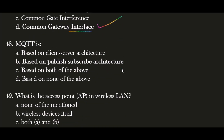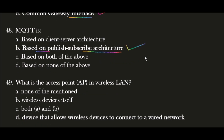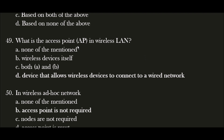Next question: MQTT is? The correct answer is option B. MQTT is based on a publish-subscribe architecture. Next question: What is an access point (AP) in a wireless LAN? The correct answer is option D. An access point in a wireless LAN is a device that allows wireless devices to connect to a wired network.